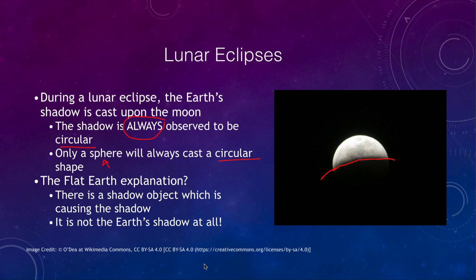What is the flat Earth explanation? They talk about a 'shadow object' — some other mysterious unseen object that would be causing the shadow, not the Earth itself. Now in order for this to be scientific, it has to be something we can test. We can predict eclipses with very high precision based on a spherical Earth and its orbit, the moon's orbit, and the positioning of the sun — down to the second. The shadow object cannot be tested, so it may be a belief but it's not something we would consider science.